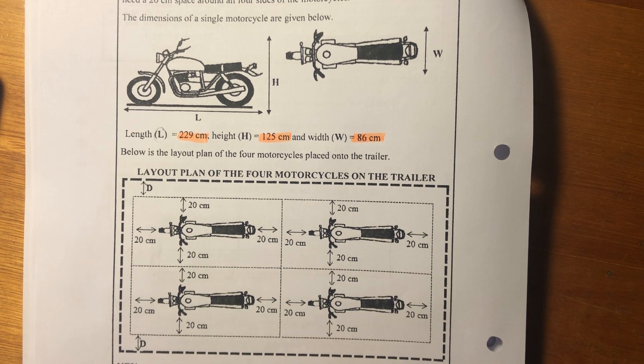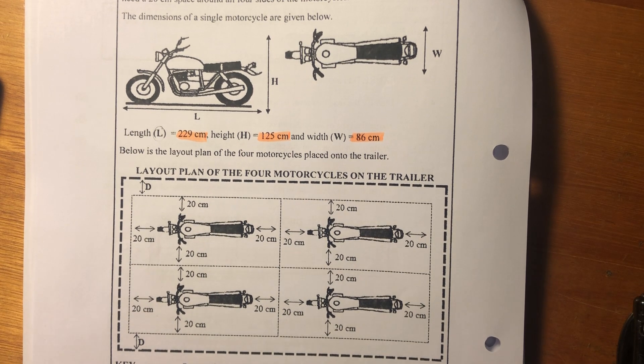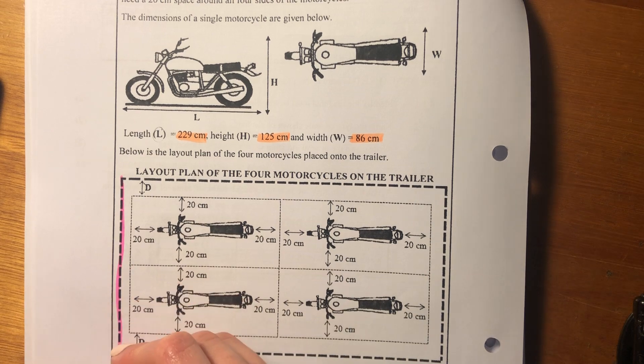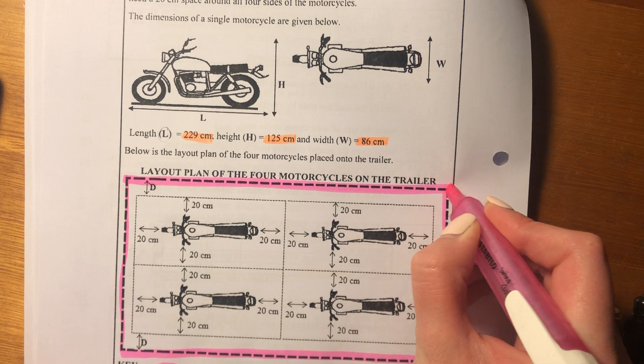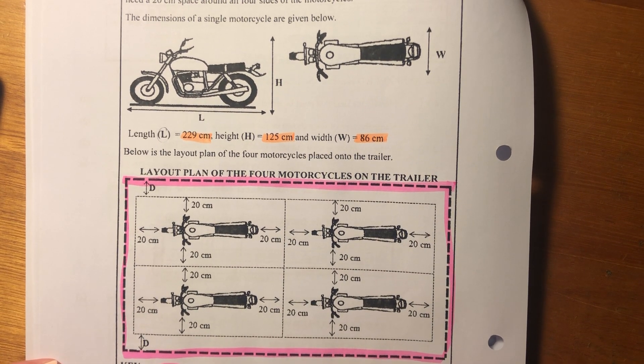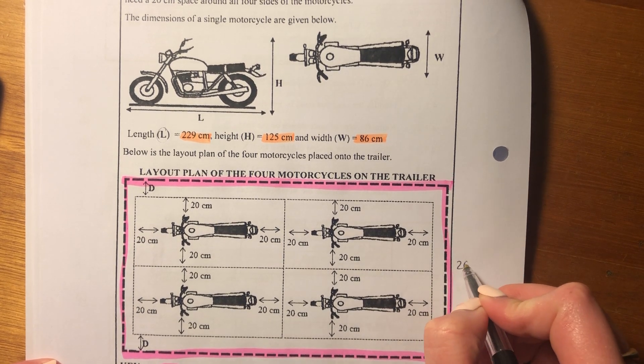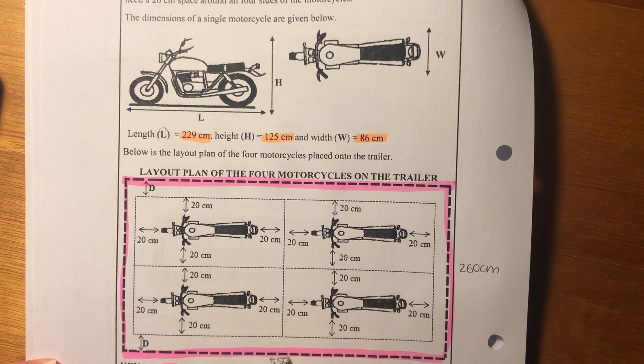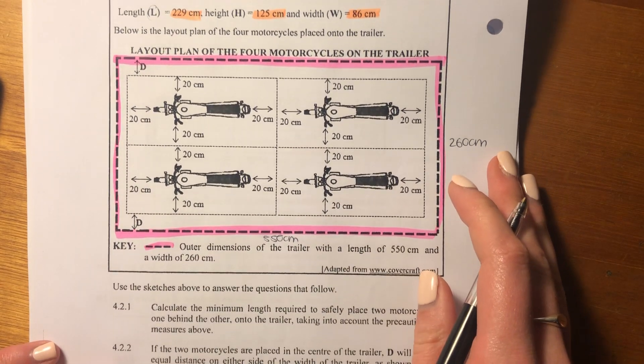Then it says the outer dimension of the trailer. So this here, these like thick dotted lines, I'm actually going to do it in color just so that we know what's cracking lacking. So you go like this. Oh, wow, that was very square. My bad. The outer dimensions of the trailer with a length of 550 centimeters and a width. So this here is 260 centimeters in width. And the length is 550 centimeters of this outside pink line.